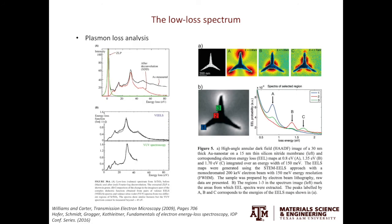We can also just look at the plasmon loss. When doing such analysis, we need to first remove the background from the zero loss peak, then perform the deconvolution. The model used is called Fourier log deconvolution — we'll discuss more on deconvolution models in the next video. After removing the background and deconvolution, what you get is essentially similar to VUV — the valence ultraviolet spectra. In the valence EELS approach, you have a larger energy range and can look at higher frequency information.